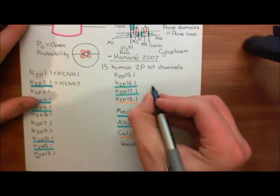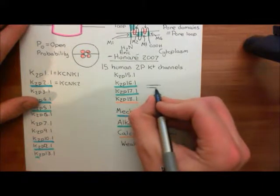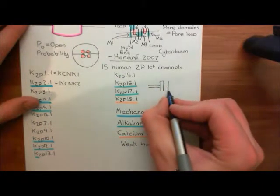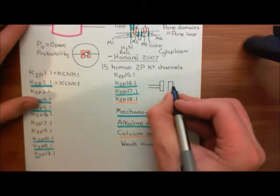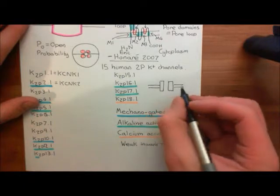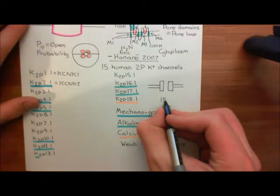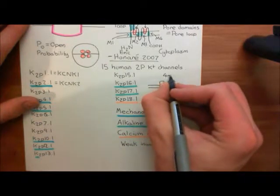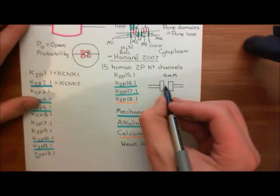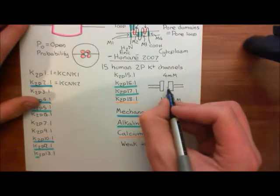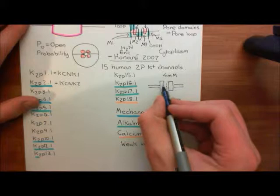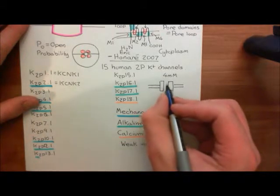Let's think about when potassium would be moving in and out of the cell membrane. The intracellular concentration of potassium is around 155 millimolar, whilst the extracellular concentration is 4 millimolar. So if this channel is weakly inward rectifying, it means that it will prefer to allow potassium to move in and doesn't really like allowing potassium to move out.